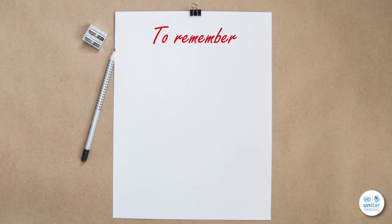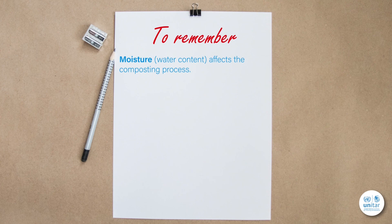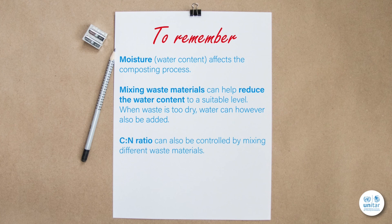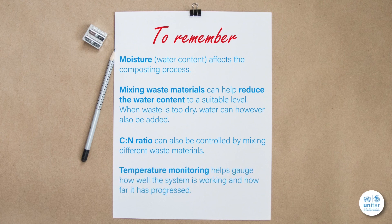Let's summarize what we have learned in this session. We have seen how moisture affects the composting process: if too wet the compost pile will start smelling; if too dry the composting process stops as the microorganisms cannot decompose the material. Different materials will have different water content and we learned how to calculate the water content of a mixture. Similarly, CN ratio has an ideal range for composting, and we have seen how to steer it by mixing different types of waste and how to calculate the CN ratio of a mixture.